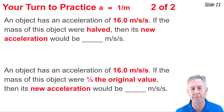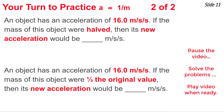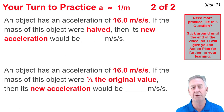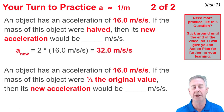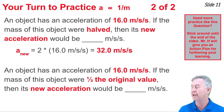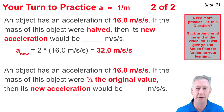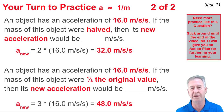Here are two more problems. Pause the video; when you're ready, press play. In the first question, the mass is halved. The reciprocal of one-half is doubling, so we double 16 meters per second squared to get 32 meters per second squared. In the last question, the mass is one-third of the original value. The reciprocal of one-third is tripling, so we triple 16 meters per second squared to get 48 meters per second squared.